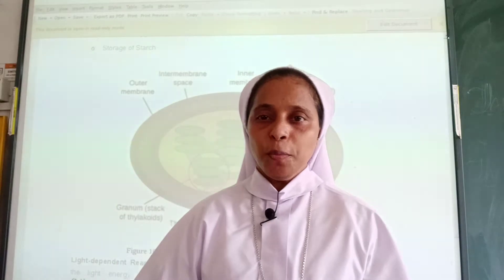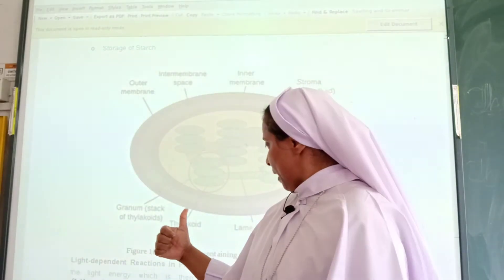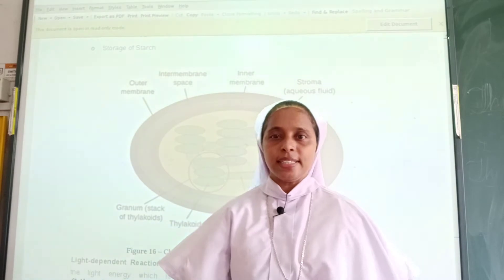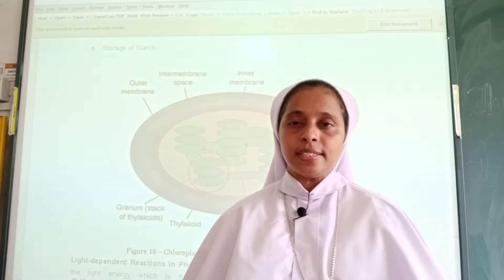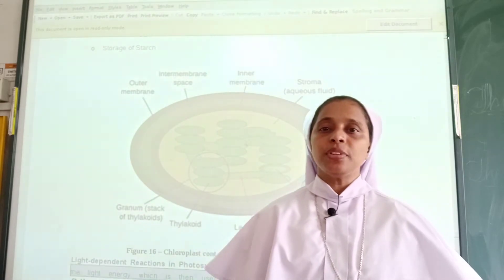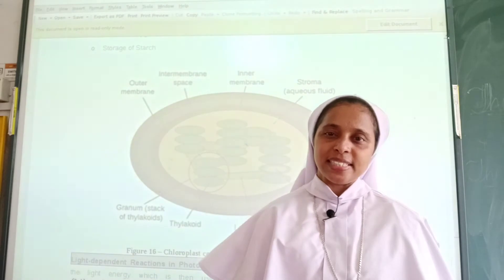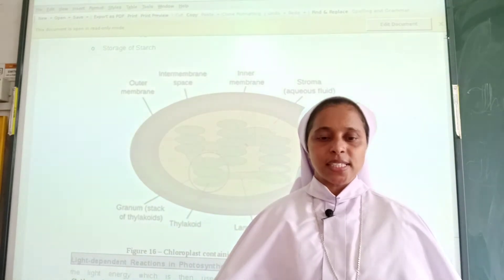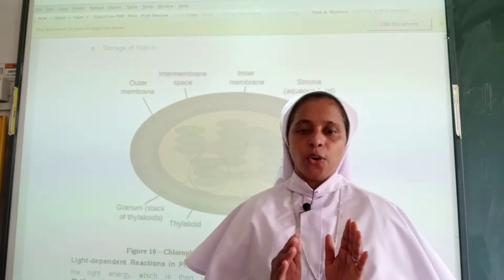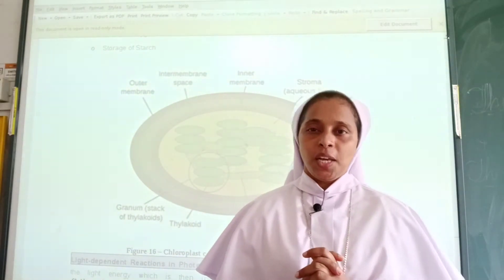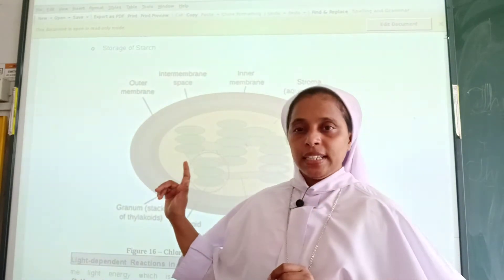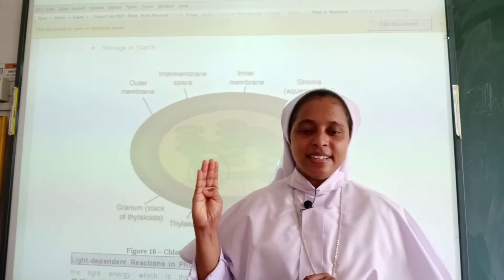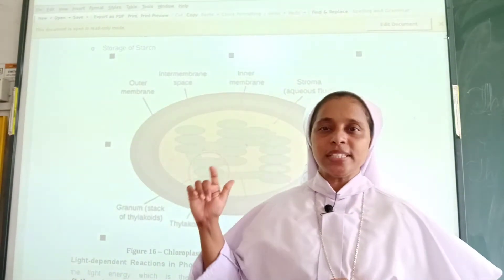Next, we will learn about chloroplast. Chloroplast are also cell organelles that conduct photosynthesis in plants. The word chloroplast is derived from Greek words — 'chloro' means green and 'plast' means plants. This chloroplast contains the pigment called chlorophyll along with lipids, carbohydrates, minerals, DNA, RNA, grana, thylakoids, and stroma.